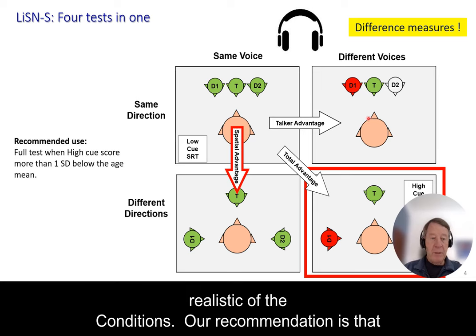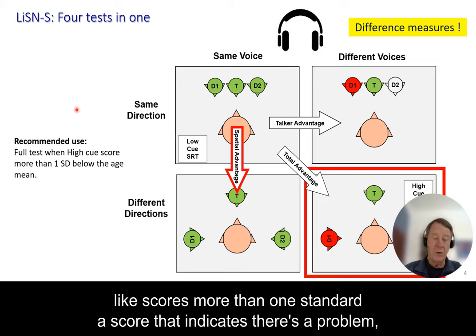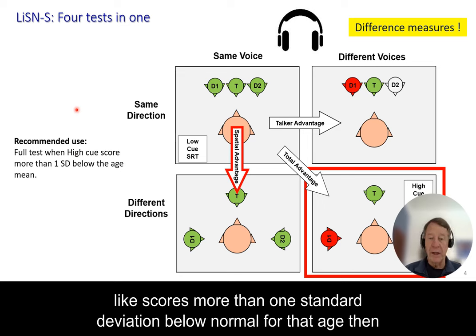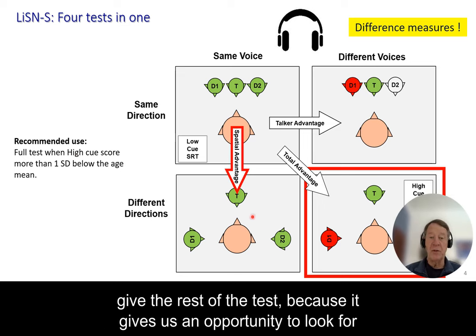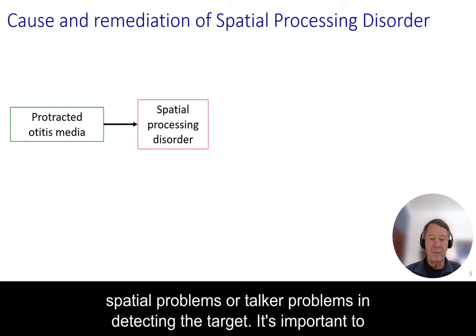Our recommendation is that if that first subtest gives a score that indicates there's a problem — like scores more than one standard deviation below normal for that age — then give the rest of the test, because it gives us an opportunity to look for spatial problems or talker problems in detecting the target.